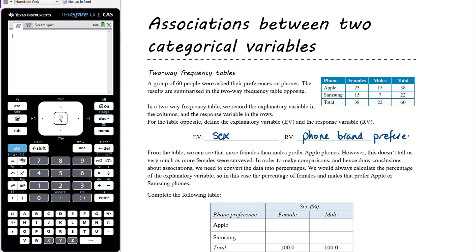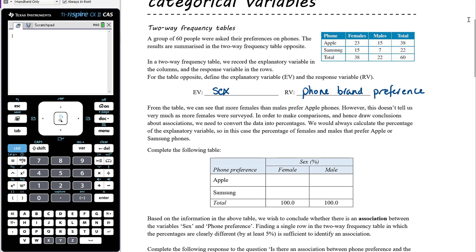From the table we can see that more females preferred Apple phones than males, but we didn't survey equal numbers of females and males, so the raw data doesn't allow us to easily make comparisons. The first thing we need to do is convert the data into percentages. What we're interested in is the percentage of the explanatory variable — not what percentage of Apple users were female, but what percentage of females were Apple users. So we divide by the totals in the explanatory variable column.